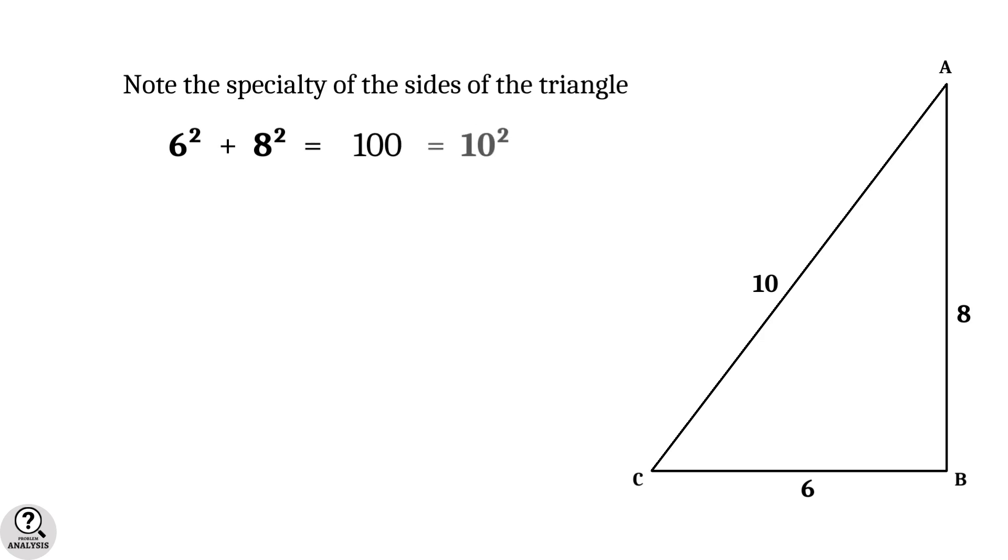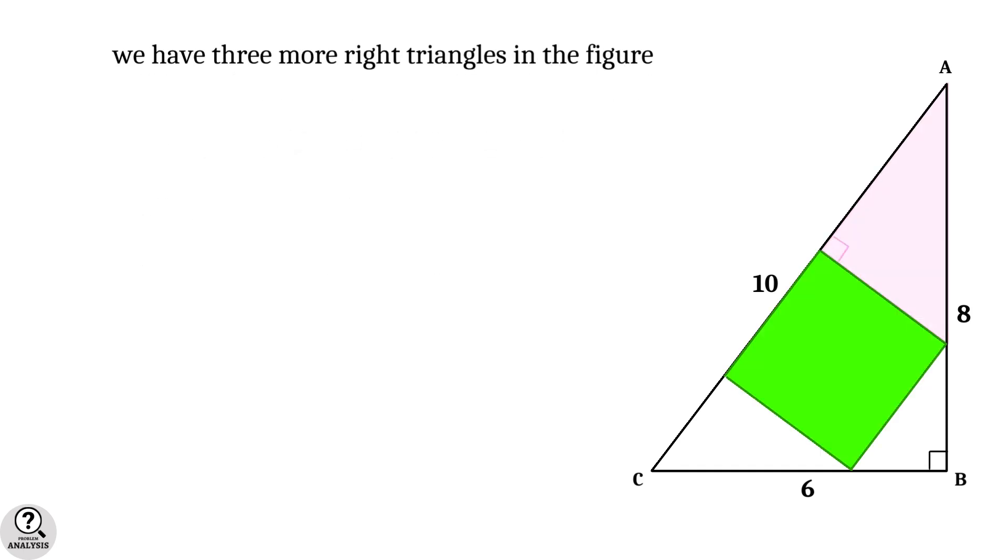What does it mean? The sides of the triangle obey the Pythagorean theorem, which means triangle ABC is a right triangle. Note that we have three more right triangles in the actual figure.